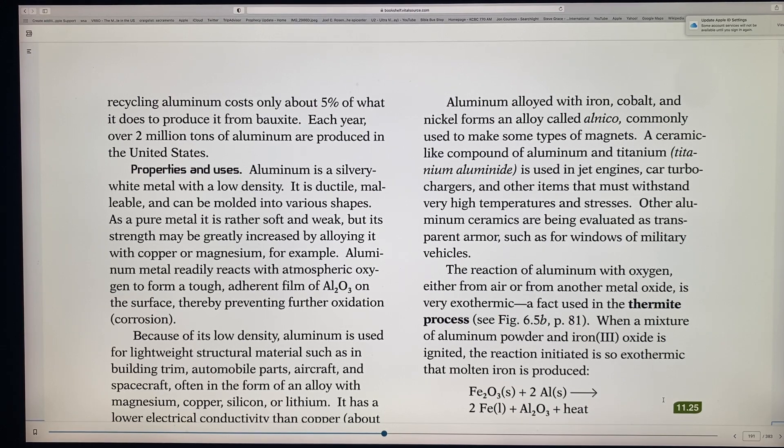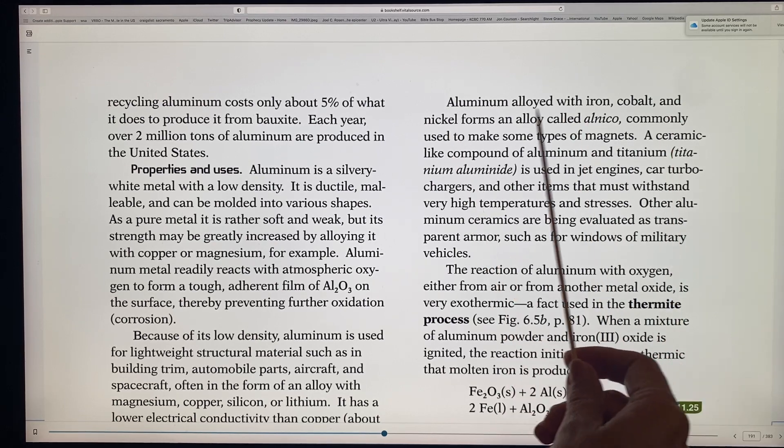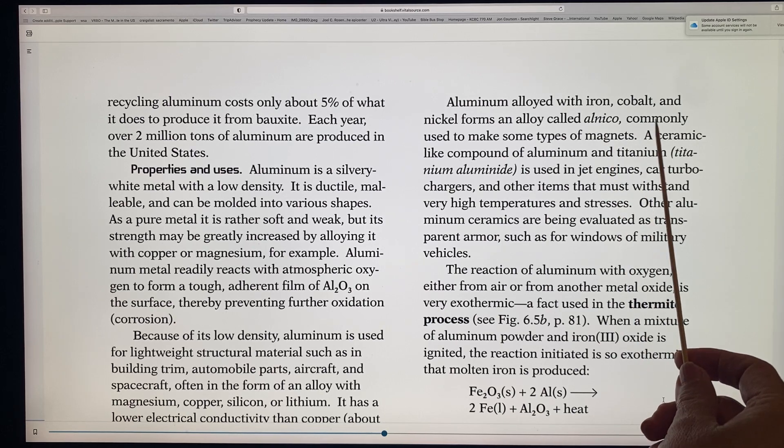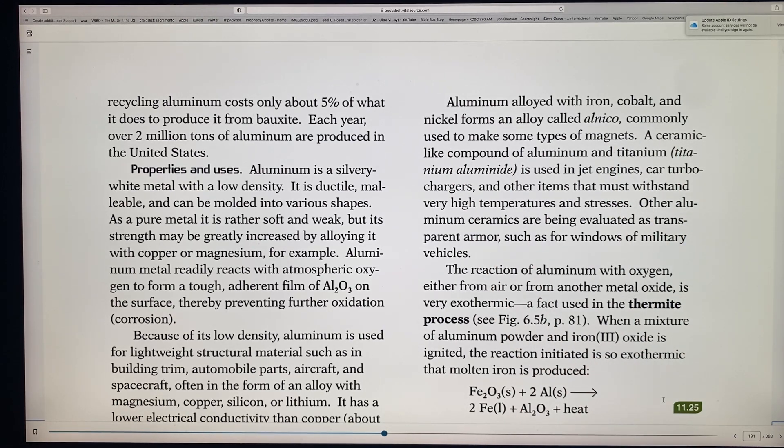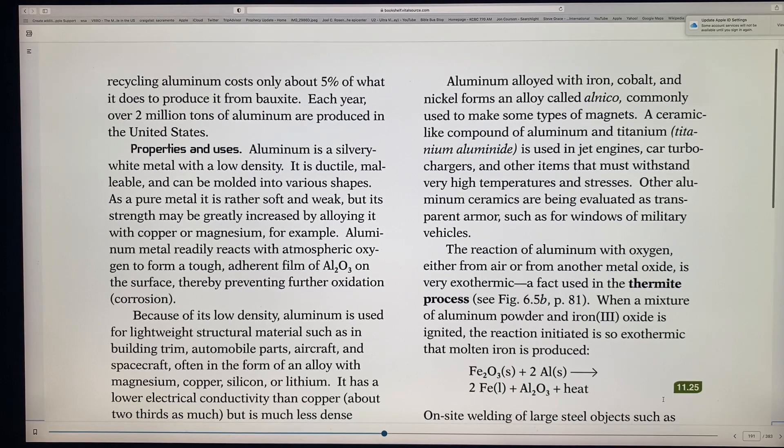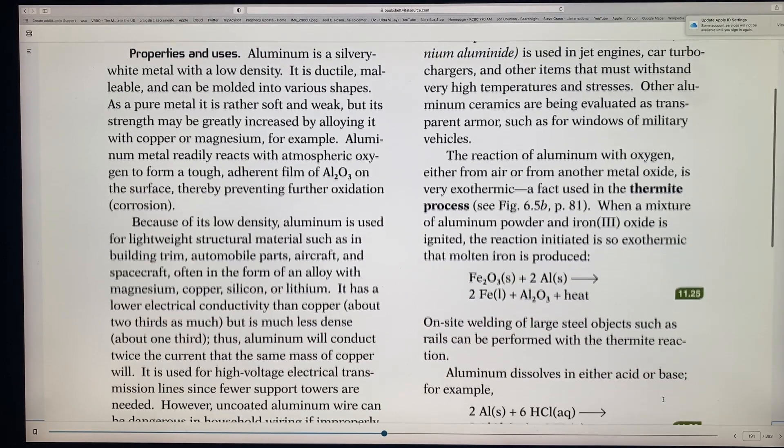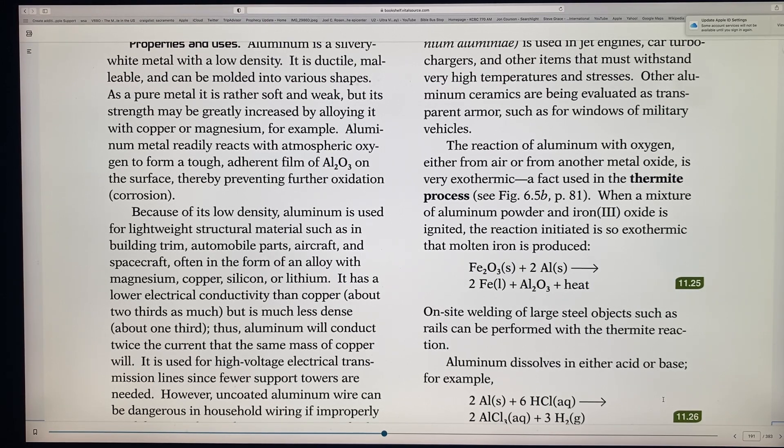So aluminum alloyed with iron and cobalt and nickel, you can put a lot of different metals and melt them as alloys with aluminum to make them stronger and have different characteristics. In fact, aluminum alloyed with iron, cobalt and nickel forms an alloy called alnico and alnico is what we use to make some types of magnets. And a ceramic-like compound of aluminum and titanium is used in like jet engines and car turbochargers and other items that may have to withstand very high temperatures and very high stresses. So other aluminum ceramics are being evaluated as for transparent armor, such as for windows of military vehicles.